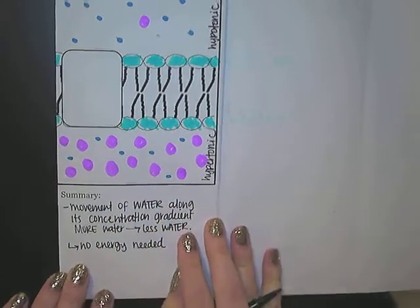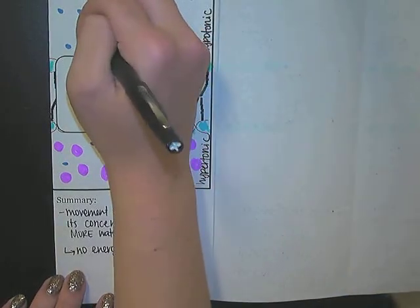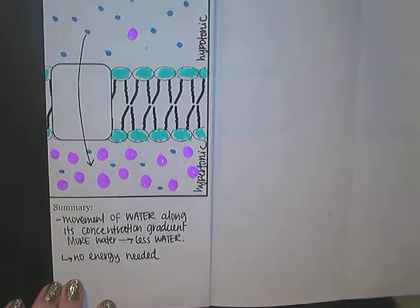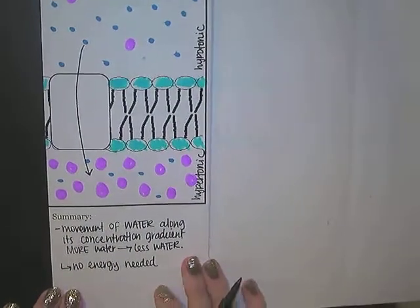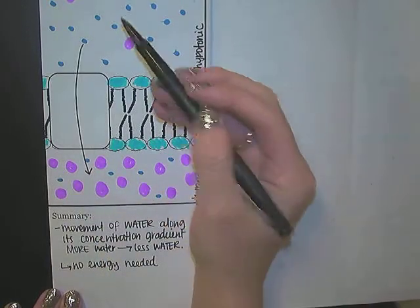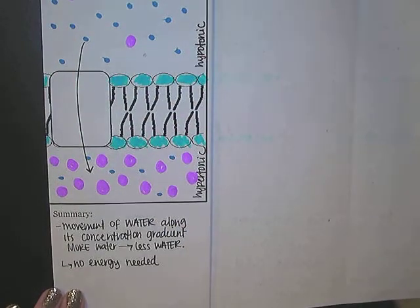The water is just diffusing across the membrane through this protein channel aquaporin and into the hypertonic solution. That way it's going to dilute this area and we're going to eventually try and get to where both sides are isotonic.